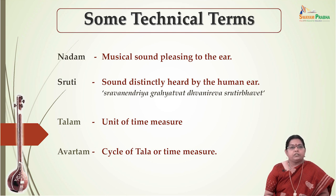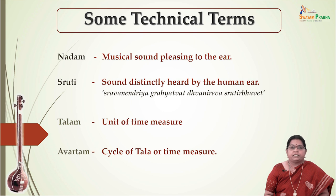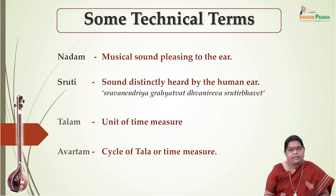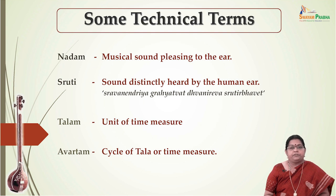We have talked about Shruti, and Laya is another important element of music. Laya is the inherent tempo which is denoted through Talam. Talam is a unit of time measure and comprises a series of Kriyas, or physical actions, which control the tempo of a piece of music. It is a complete cycle of metrical phrase composed of a fixed number of actions.